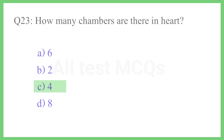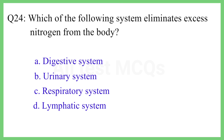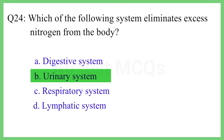Question No. 24. Which body system eliminates excess nitrogen from the body? The correct answer is Option B: Urinary system.